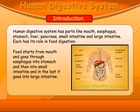Introduction. The human digestive system has parts like mouth, oesophagus, stomach, liver, pancreas, small intestine, and large intestine. Each has its role in food digestion.